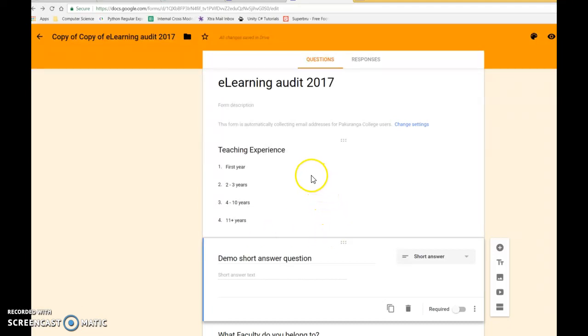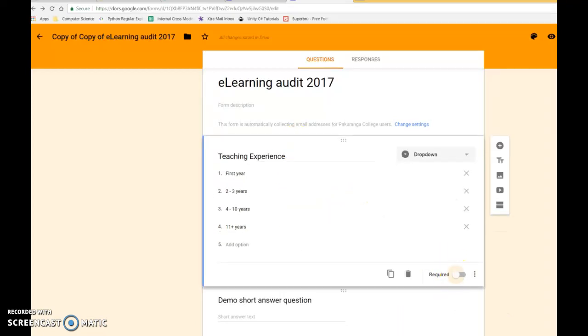For example, this is a survey that I did and it's got teaching experience. If I had clicked on required, there's no other things they could do—they have to select one of these. So I know that that is a valid piece of data, at least in the sense that they have been forced to select one.